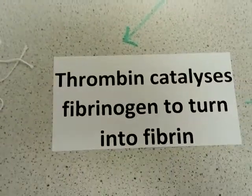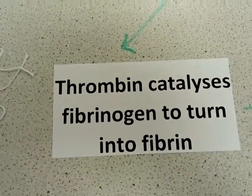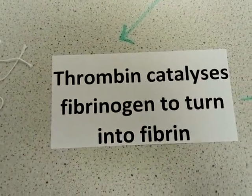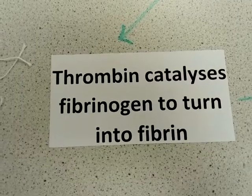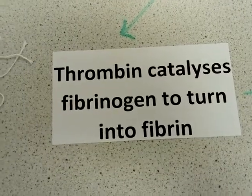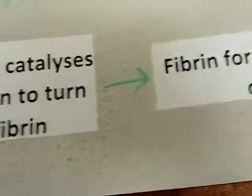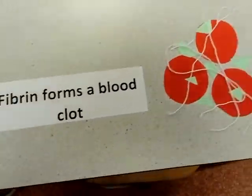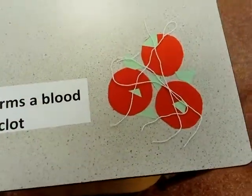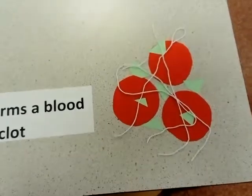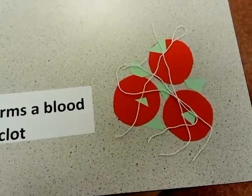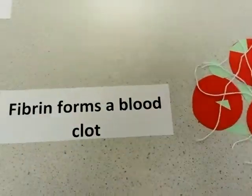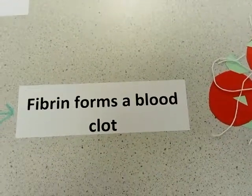The thrombin catalyzes fibrinogen to turn into fibrin. This fibrin then combines with red blood cells and platelets to form a blood clot.